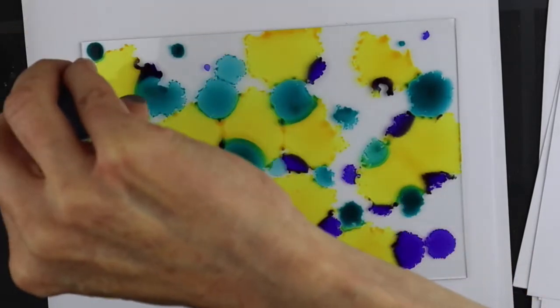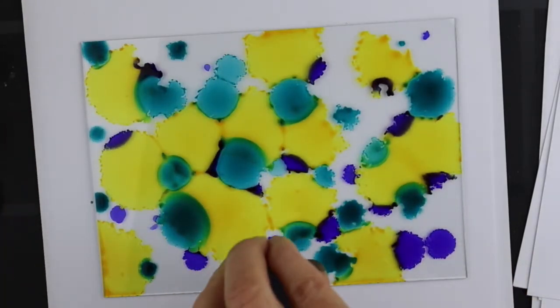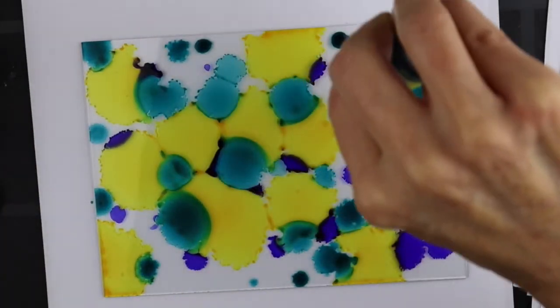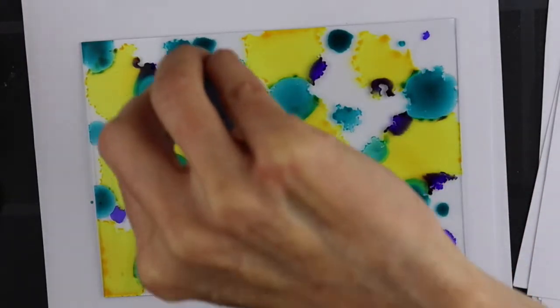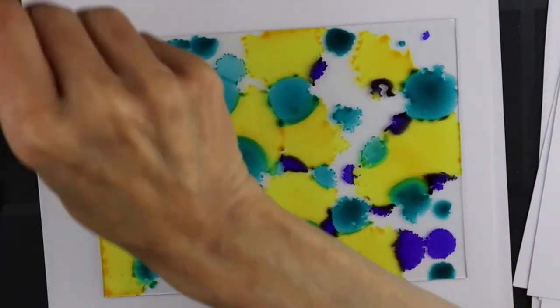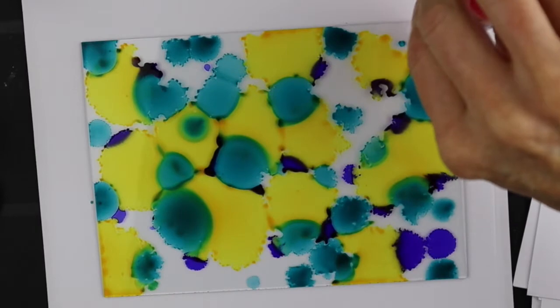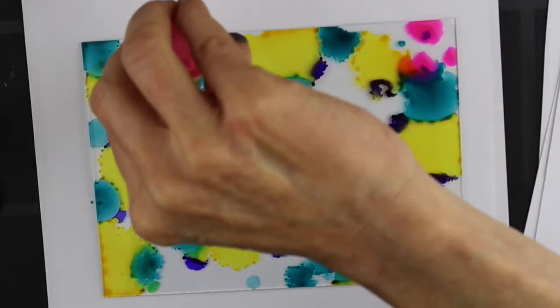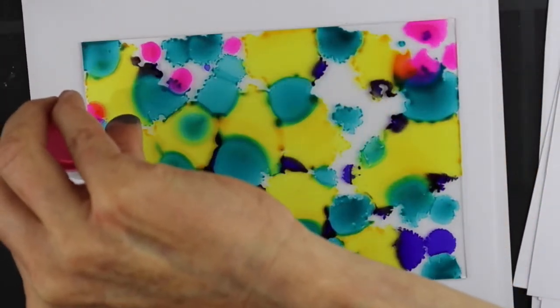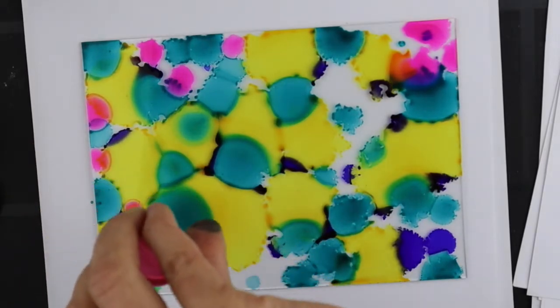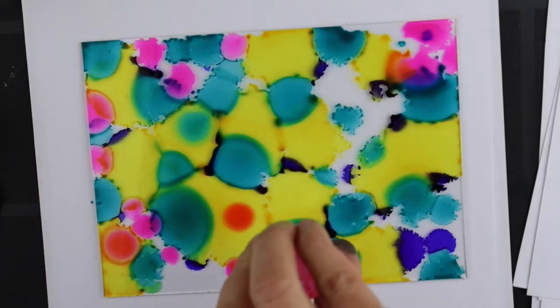We're going to keep it very abstract this time just to see how we do with it, and I'm not going to put on alcohol because I don't want it to get too diluted either. So we'll just go ahead and pour this on, try to fill up all our little nooks and crannies.